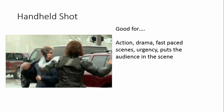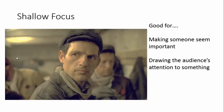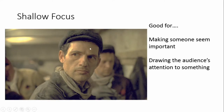Shallow focus shots are to do with what is in focus in the shot. A shallow focus means that only part of the shot is in focus — for example, this man in the foreground is in focus but everything behind him is blurry or out of focus. You've probably seen this feature on your phone. It's used to make one particular person or thing seem important and draw the audience's attention to them, making others less prominent.